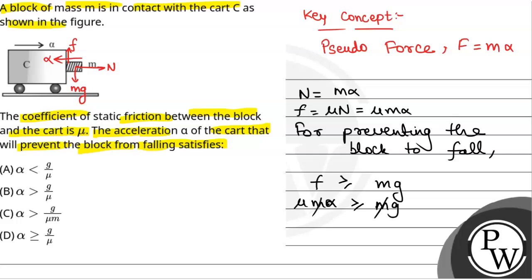From here, we will have alpha must be greater than or equal to g by mu. So, the correct option will be option D. This will be the final answer.